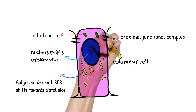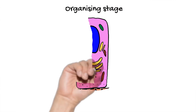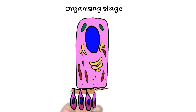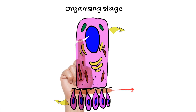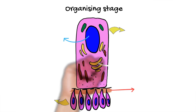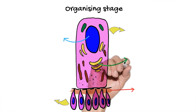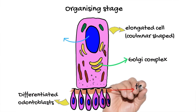In this stage, the inner enamel epithelial cells provide an organizing influence to the underlying dental papilla cells, which differentiate into odontoblasts and start producing the dentin matrix. The material produced beneath the ameloblast is the first layer of dentin by the differentiated odontoblasts. The important thing to note here is that the tissue that forms first is dentin — never enamel. Dentin always forms first.